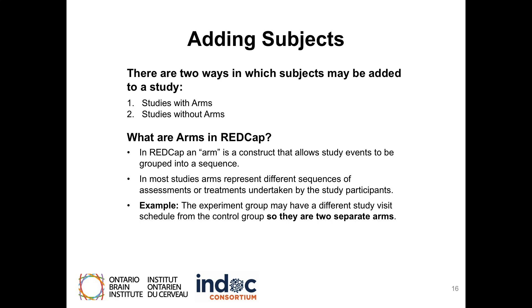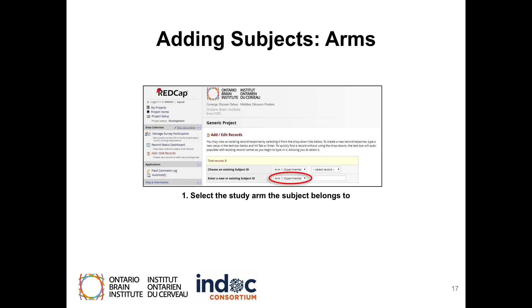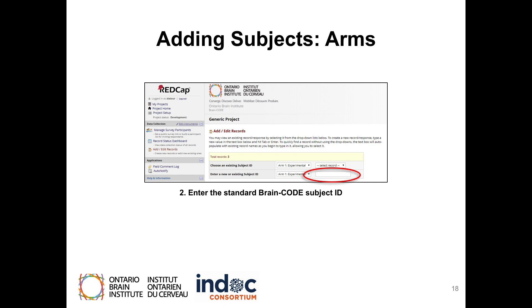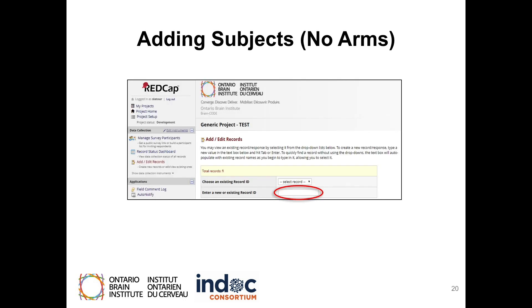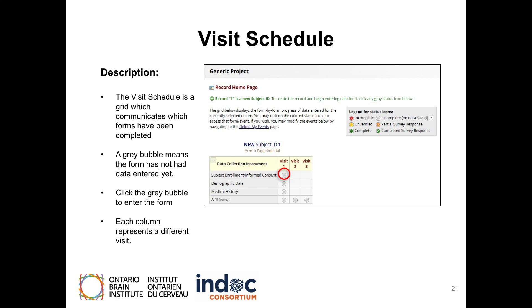To add a subject to a study with arms, first select the arm which the subject belongs to from the drop-down menu. Next, enter the standard BrainCode subject ID into the text field. Confirm that the arm is correct by checking the header within the visit schedule before data entry. To add subjects to studies without arms, navigate to the Add or Edit Records page and enter a new subject ID into the text field. You will then be redirected to a visit schedule for that subject. The visit schedule is a grid which communicates which forms have been completed. A grey bubble indicates data has not yet been entered for a form — click on the grey bubble to enter the form. Each column represents a different visit for that subject.